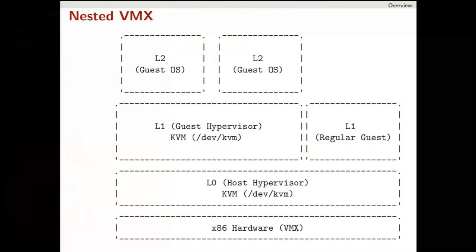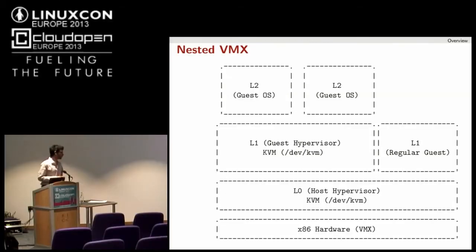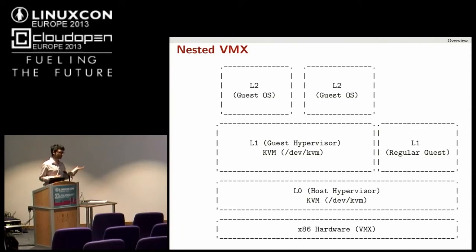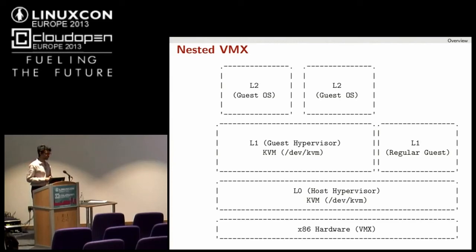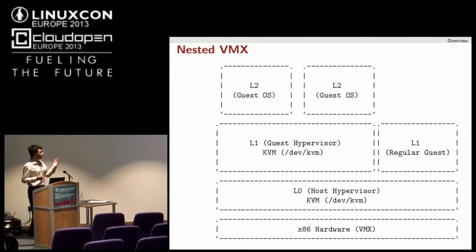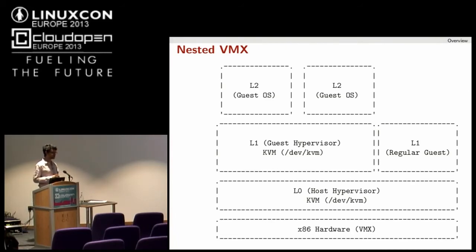When it comes to nested virtualization, we have a newer layer introduced. L0 is your level-zero physical host. L1 is your regular guest or guest hypervisor. L2 is your nested guest. So L1 is a guest hypervisor which runs its own associated nested guests.